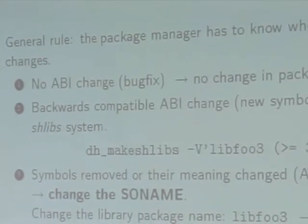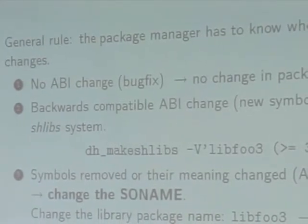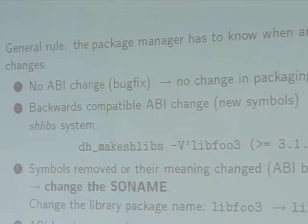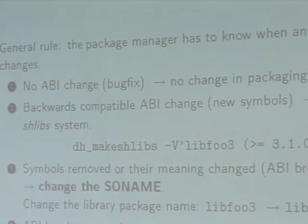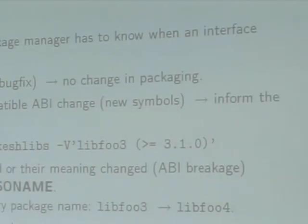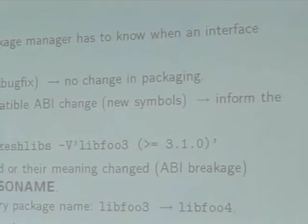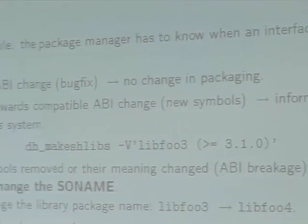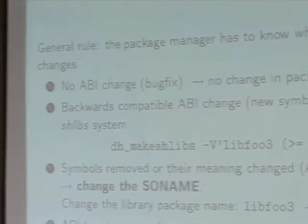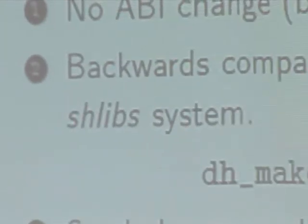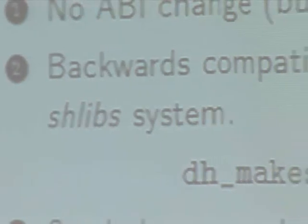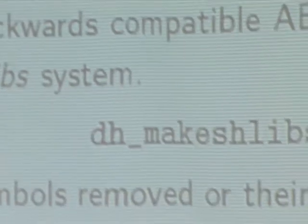But if the new version includes new features — that means new symbols, meaning new functions added to the interface, or new variables accessible — you have to inform the shlibs system of the package. You just add the -v version -e parameter to dh_makeshlibs.